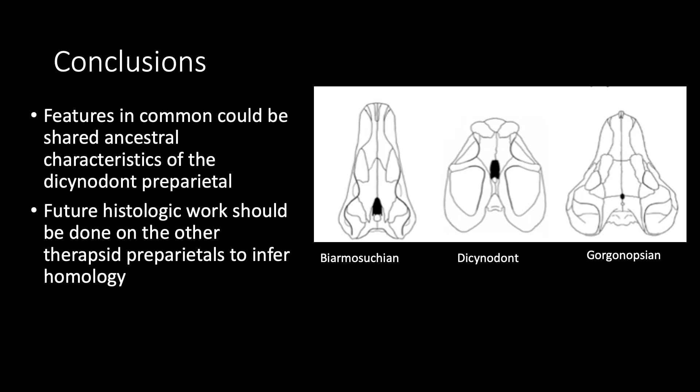To wrap up, we believe that these features in common could be shared ancestral characteristics of the Dicynodont preparietal. Future histologic work should be done on the other therapsid preparietals to see what histologic features those have. If the other preparietals have similar histologic characteristics, it could be evidence of homology. If not, then should we really be calling this bone the preparietal in all three of these groups?